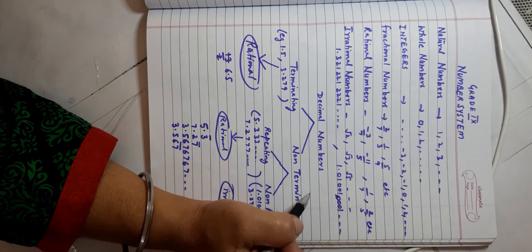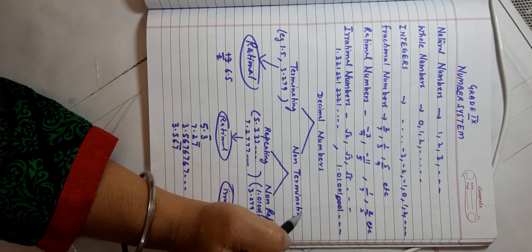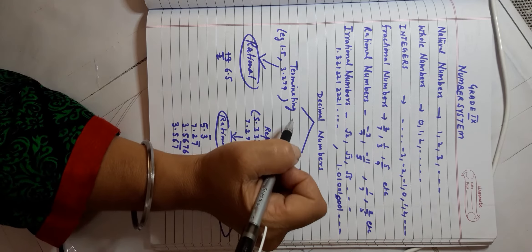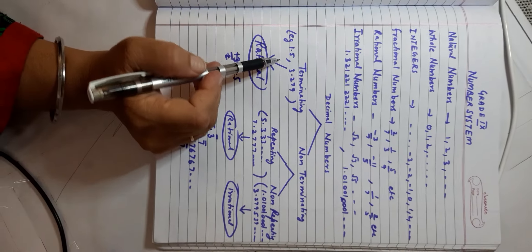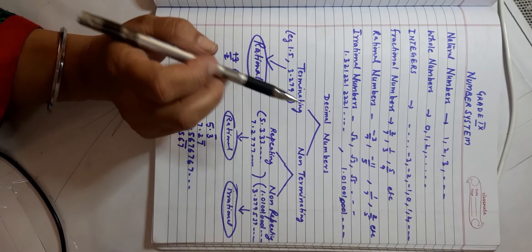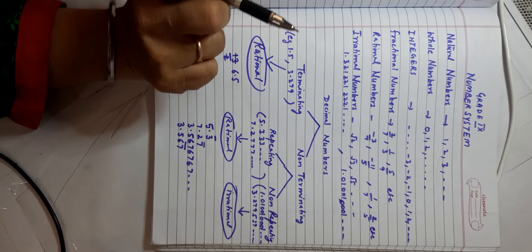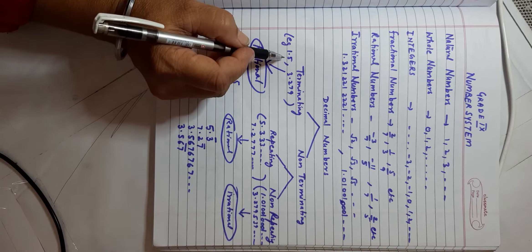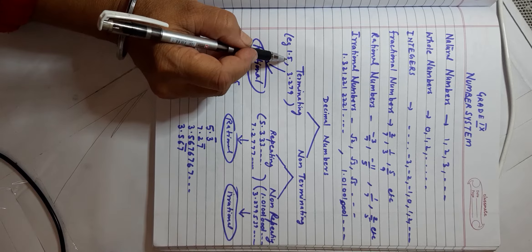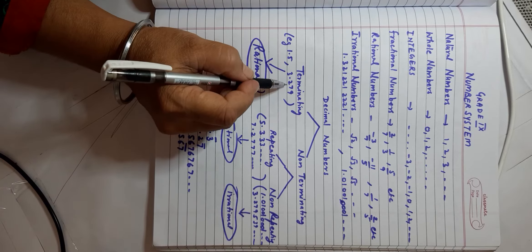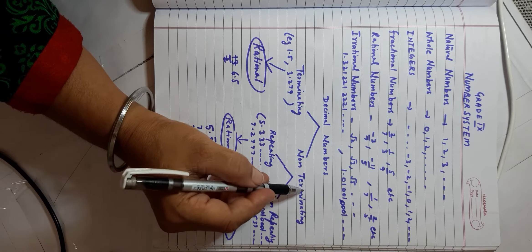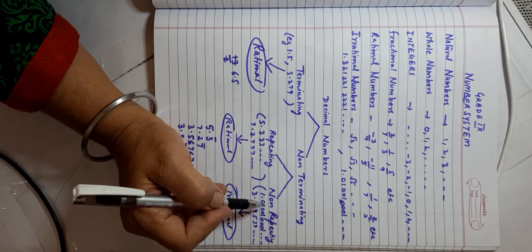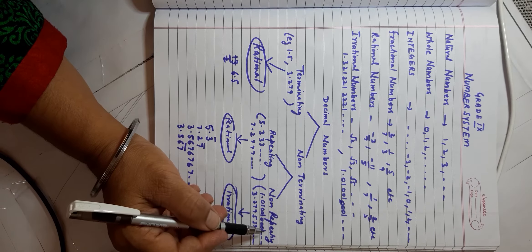Let's see how decimal numbers can be categorized. They fall into two types: terminating and non-terminating. Terminating decimals end after some digits — for example, 1.5 ends after 5, and 3.279 is another example. Non-terminating decimals can further be categorized into repeating and non-repeating.